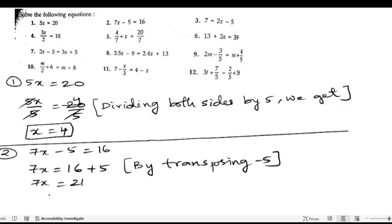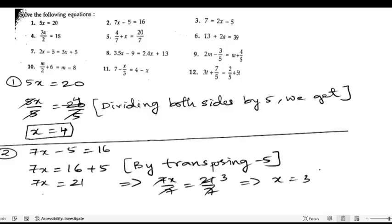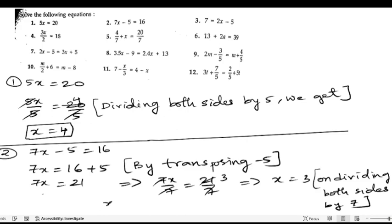Now we need to divide with 7. We write 7x/7 equals 21/7. The 7s cancel, and dividing both sides by 7, we get x equals 3.